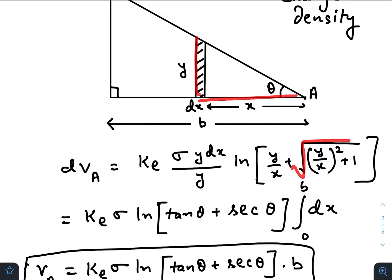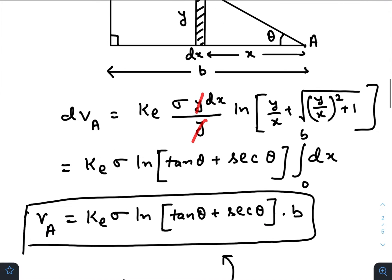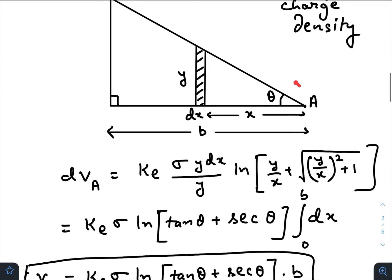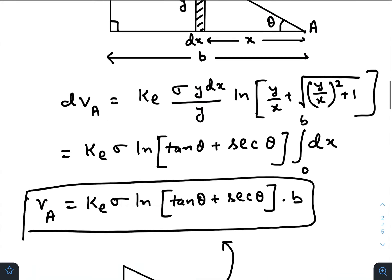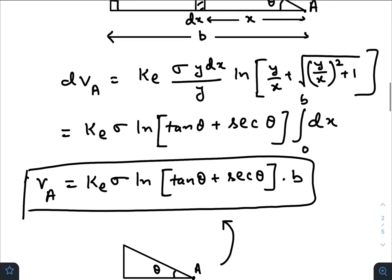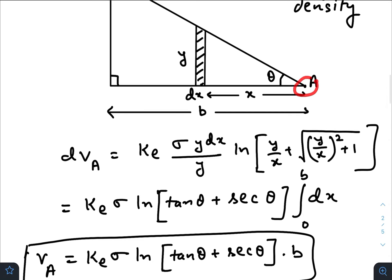So here we will get y by x whole squared plus 1. Now this y gets cancelled out. As you can see, this y by x is nothing but a constant, that is tan theta. So we have tan theta, and tan squared theta plus 1 is sec squared theta, which gives you sec theta. So ln of tan theta plus sec theta, sigma, and the limit of x would run from 0 to b, where b is the length of the base.